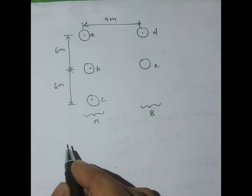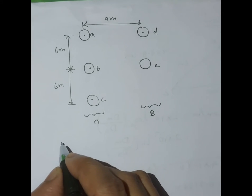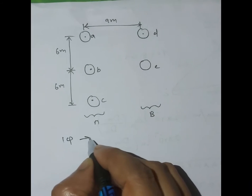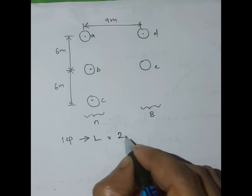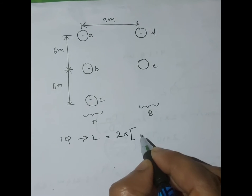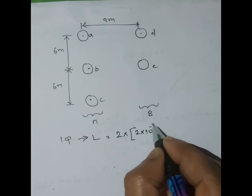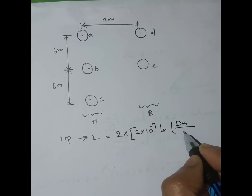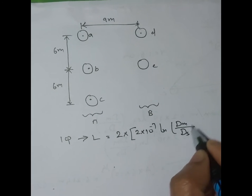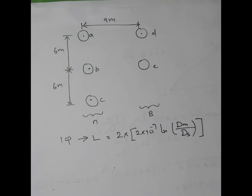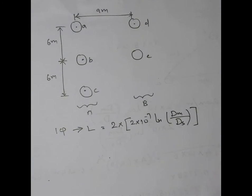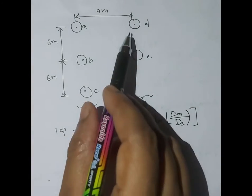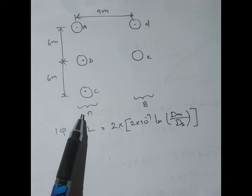We already know about inductance of a single phase transmission line. For single phase, inductance is twice the loop inductance: 2 × 10⁻⁷ ln(Dm/Ds). Here in this problem we are having go conductors and return conductors. The return phase has only two conductors and the go phase has three conductors, represented as phase A and phase B.